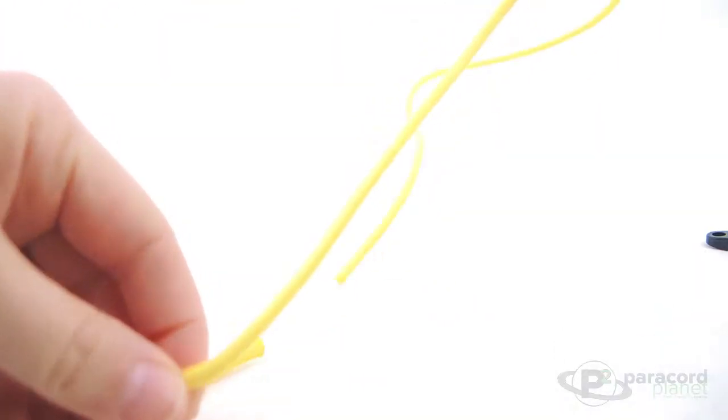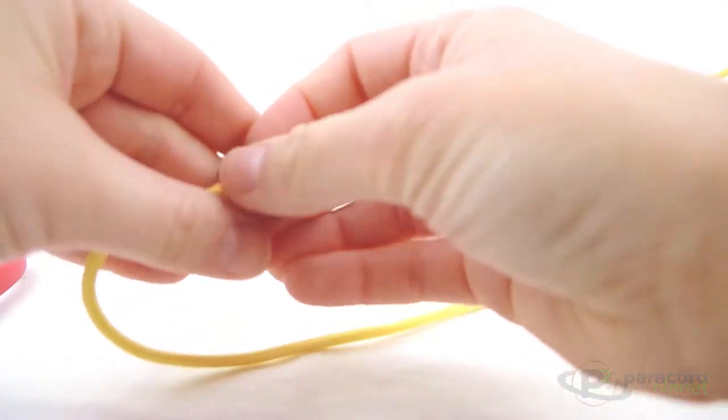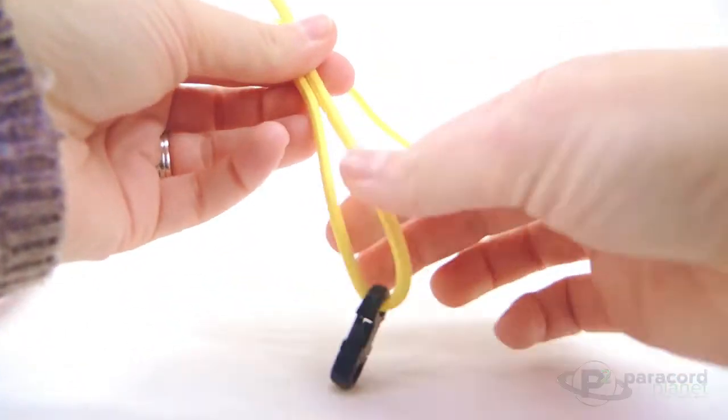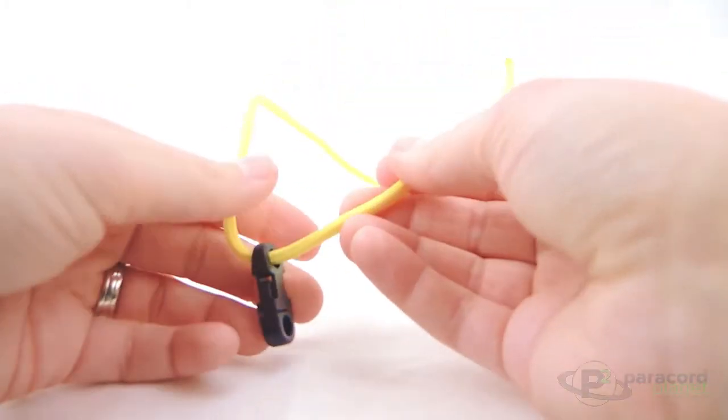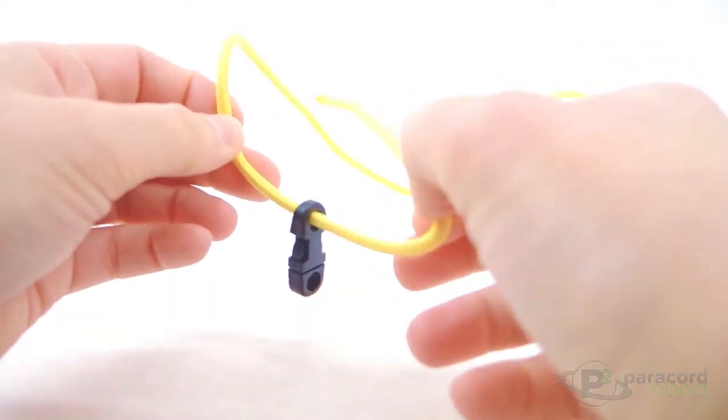To start off you will want to put one of the ends through one of the ends of the clasps. It doesn't really matter which. For this adjustable knot I like to wrap it around three times. I just think it gives it a cooler look. So you have this in your hand just like so.